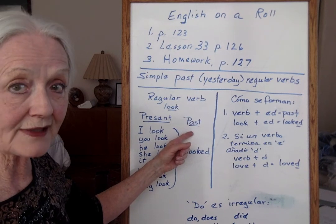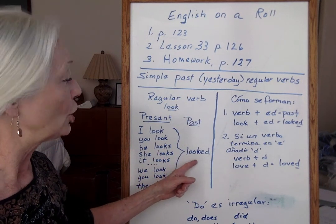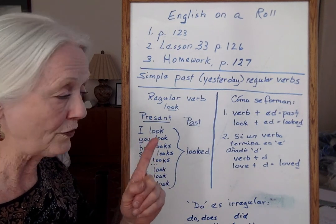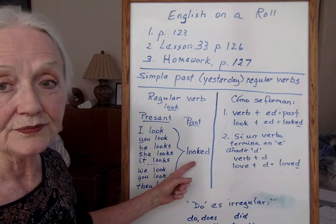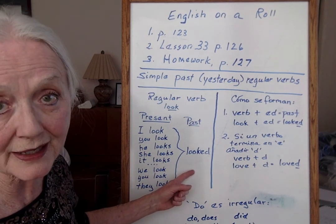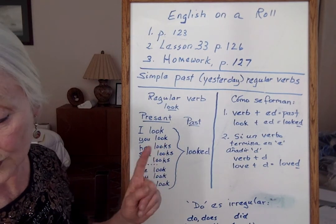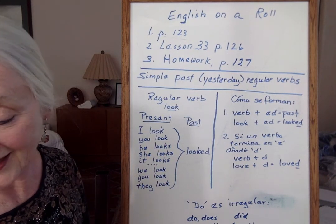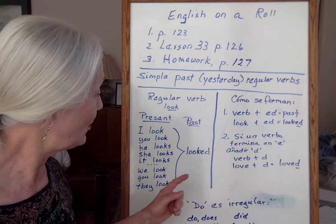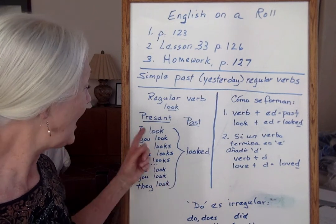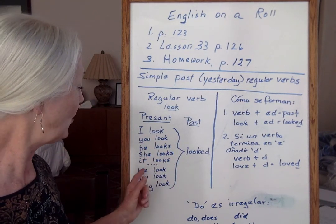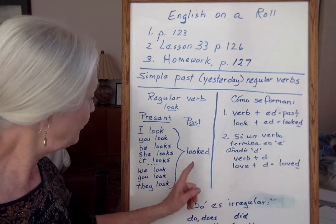But here's the past — that's the pasado. Notice: looked. There's only one form. And how do we say this? In English, todos los verbos regulares tienen solamente una sola forma en el pasado simple. So it's very simple — muy simple, una palabra. Looked: I looked, you looked, he looked, she looked, it looked, we looked, you looked, they looked. Mismo.